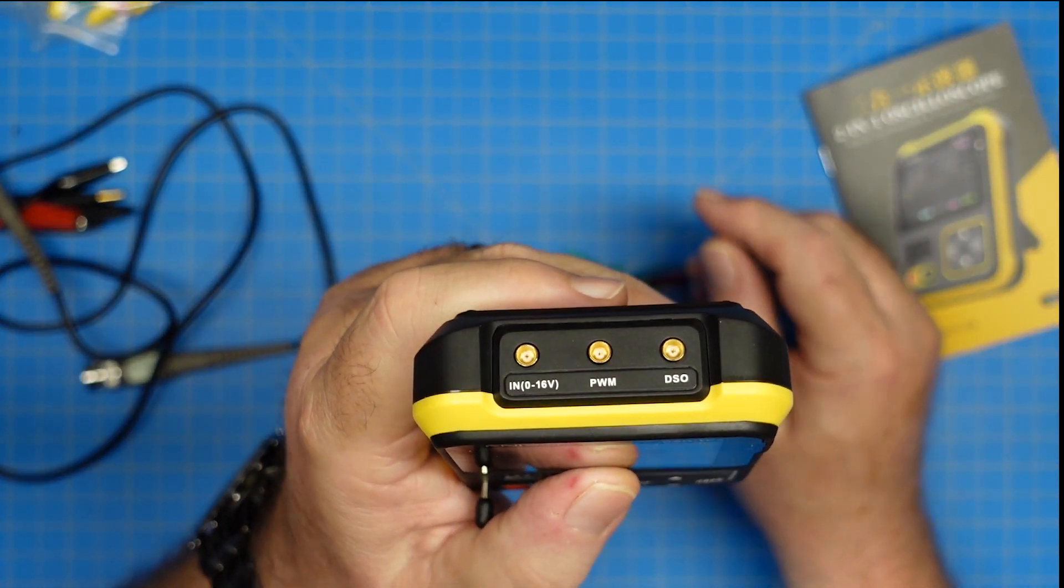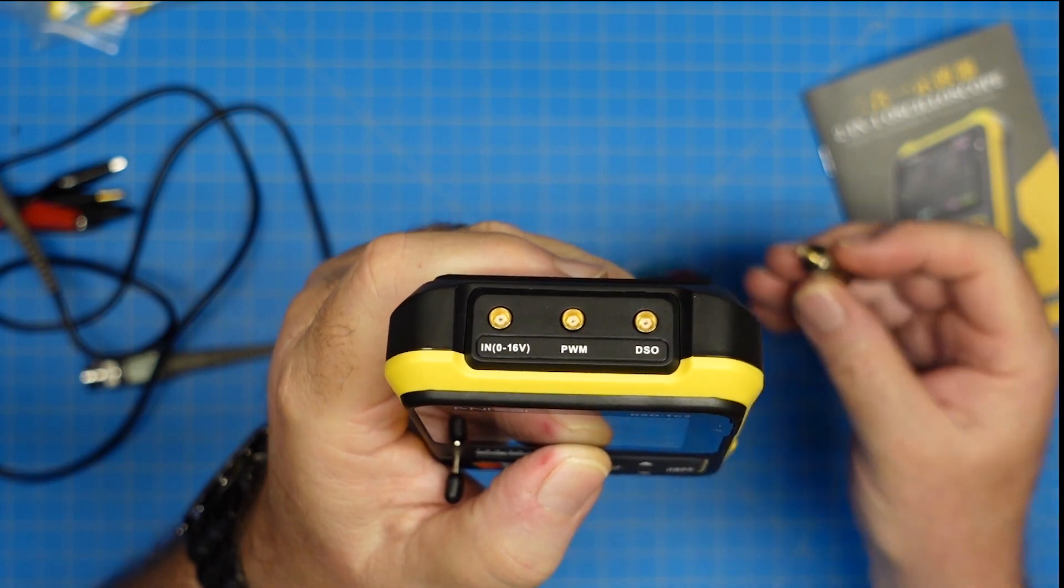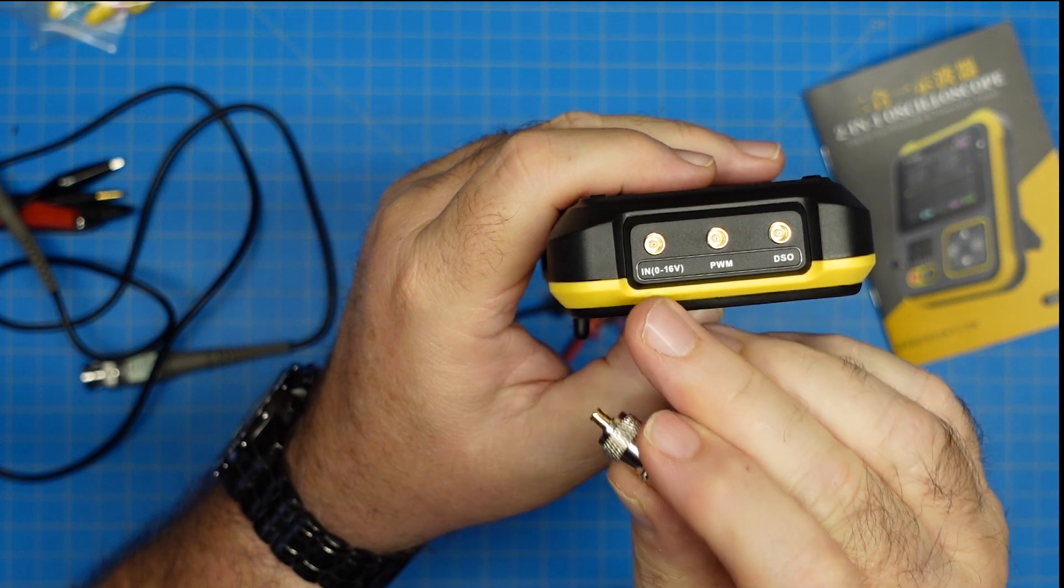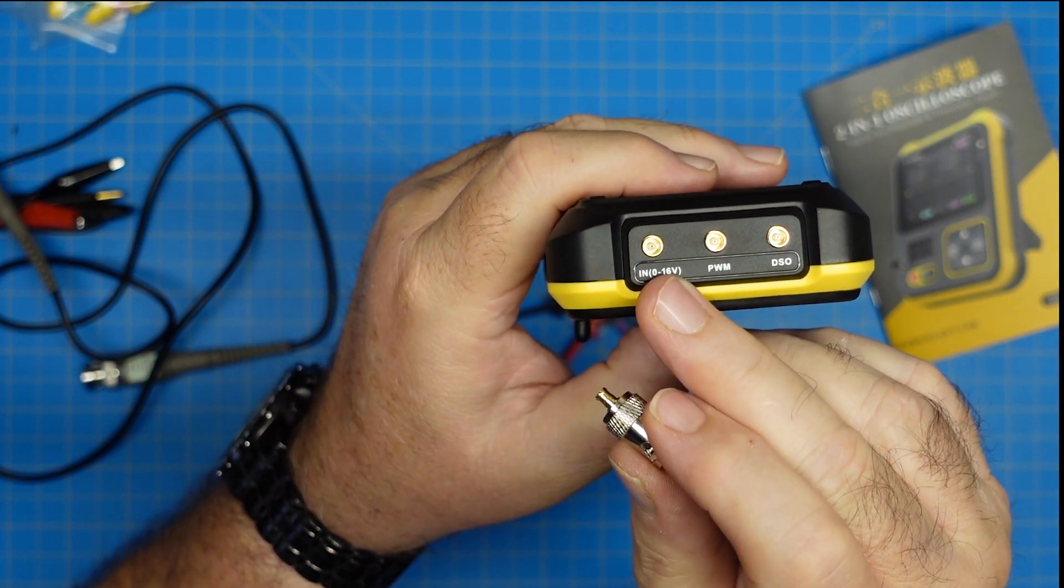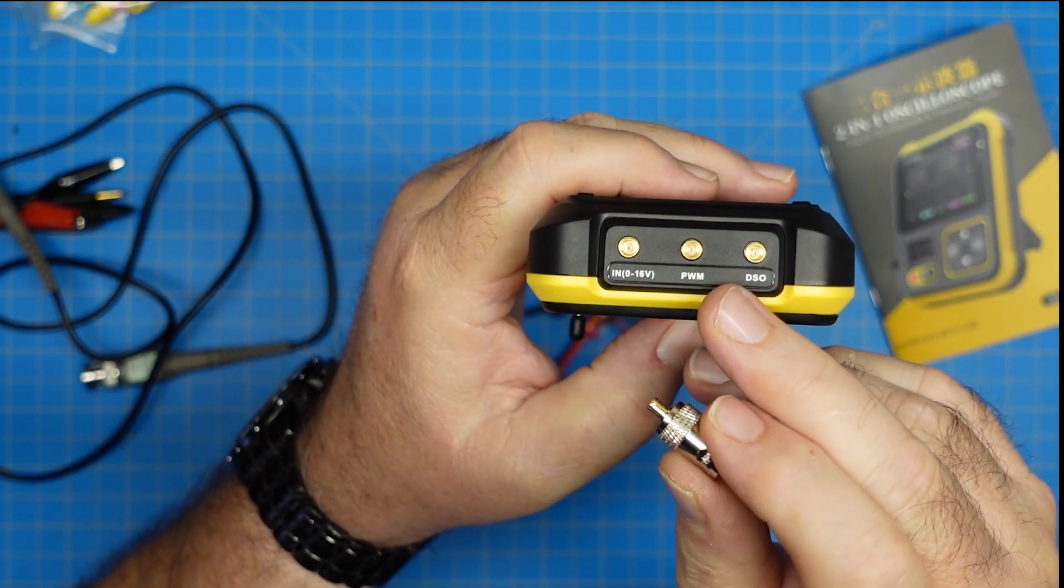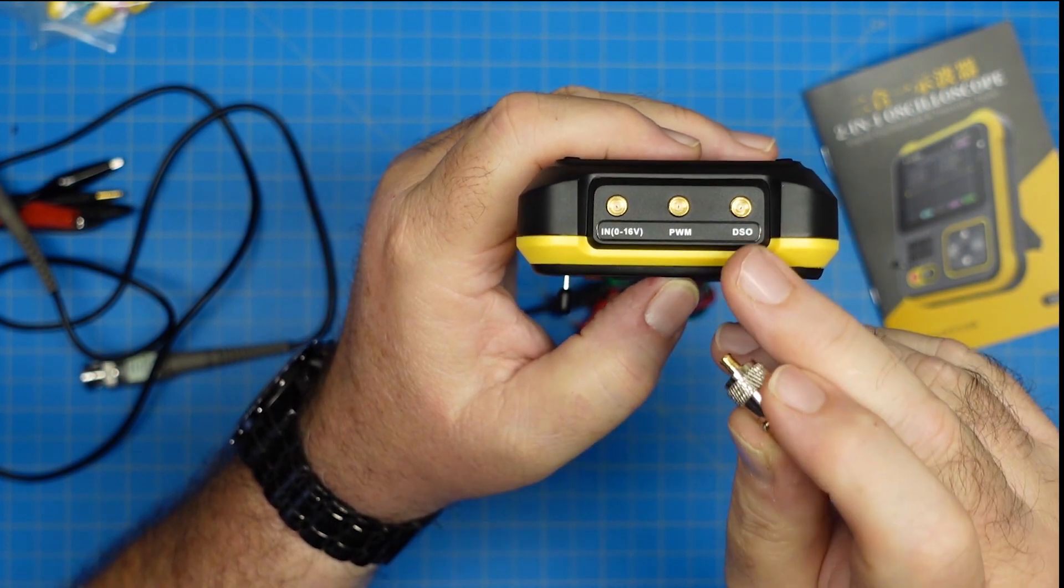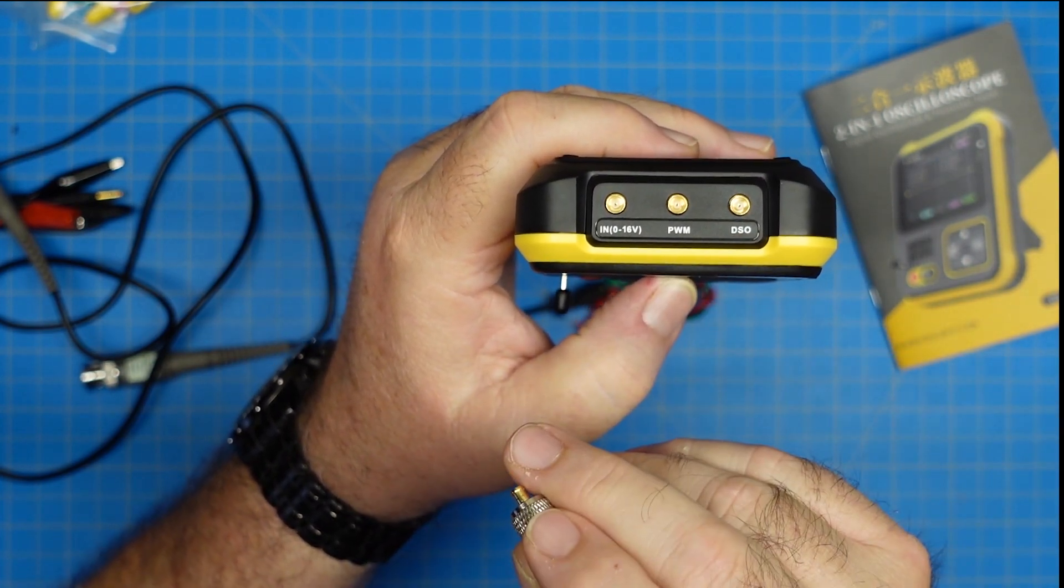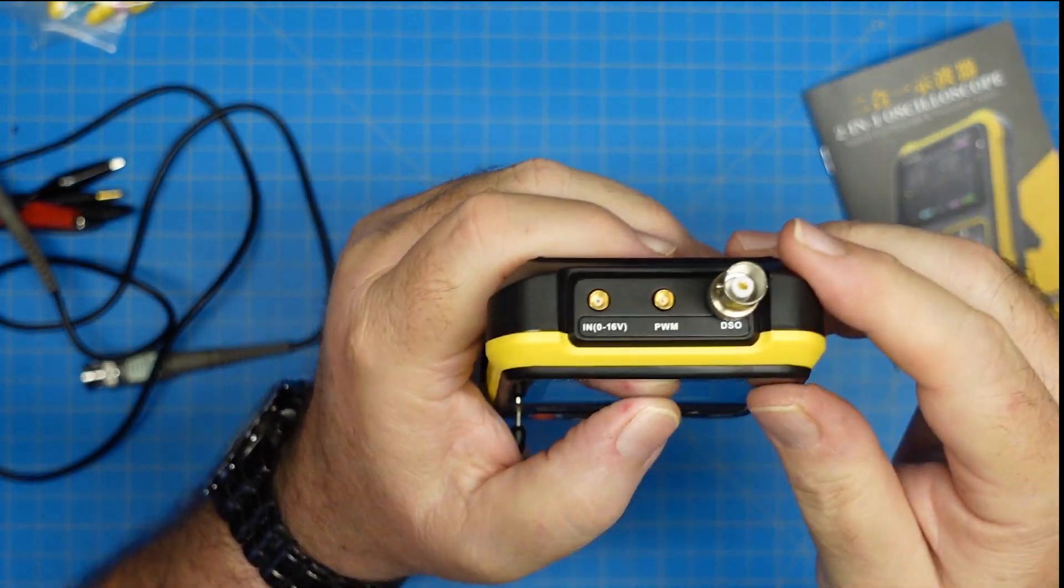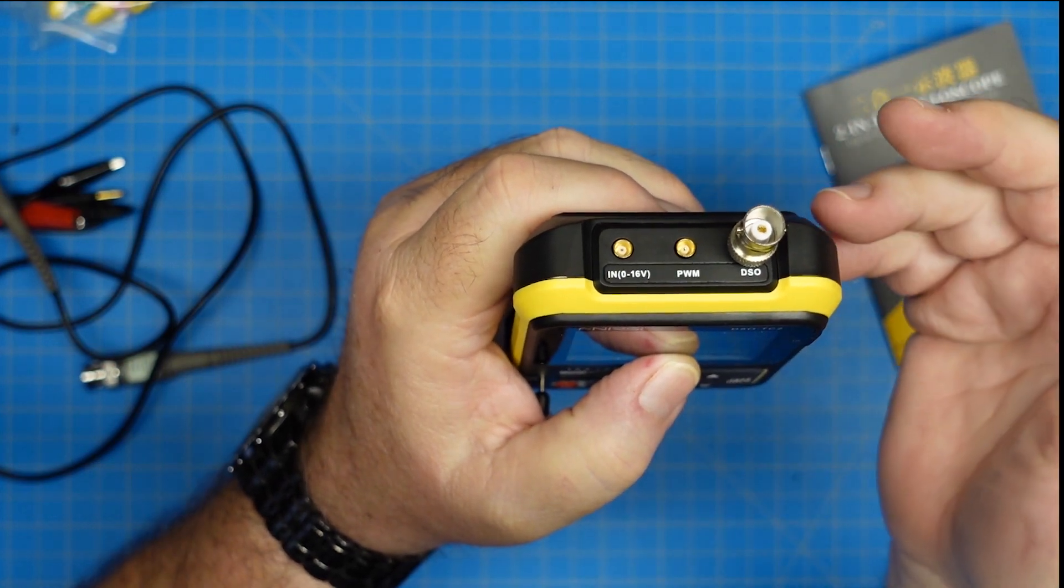This is powered. It has an internal battery, and it can be charged or run directly off of a USB-C power source. The tester end here is an MCX connector. This is for input voltage testing. This is our PWM signal generator. And that's our digital storage oscilloscope connection. And what we do with that is that guy goes in there, depending on what function we want to do.